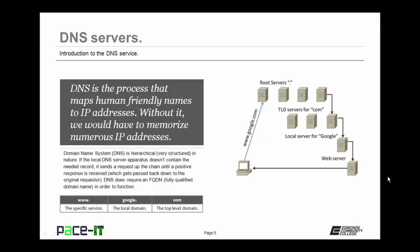DNS is the process that maps human-friendly names — like www.google.com — to their appropriate IP addresses. Without DNS, we would have to memorize all of the IP addresses we wished to visit. DNS stands for Domain Name System, and it's very structured in nature. If the local DNS server doesn't contain the needed record, it sends the request up the DNS chain until a positive response is received, which then gets passed back down to the original requester. DNS requires that an FQDN — fully qualified domain name — is used in order for it to function properly.